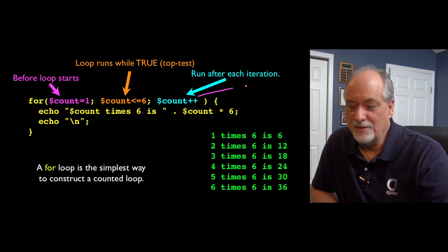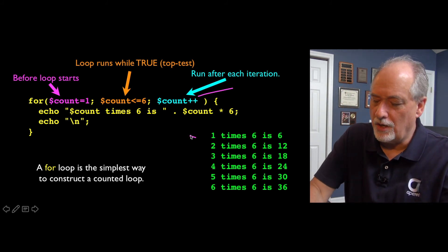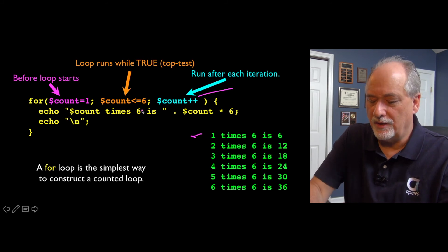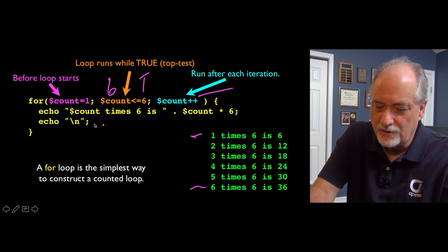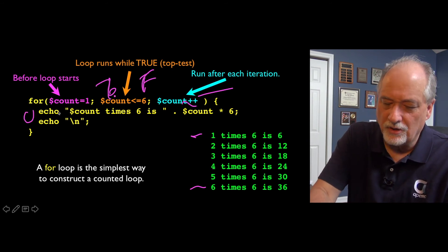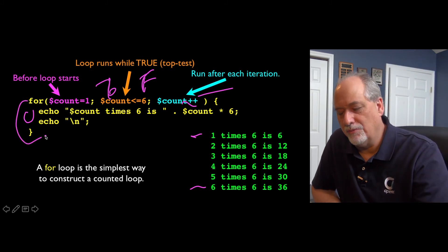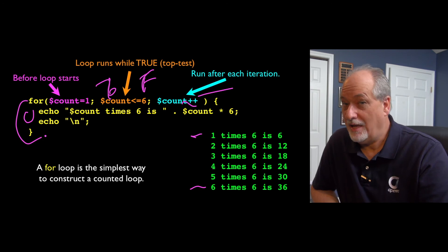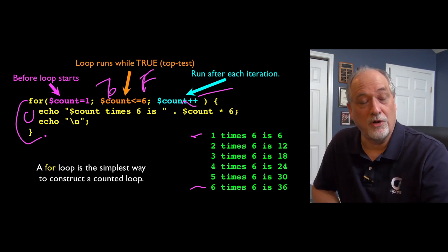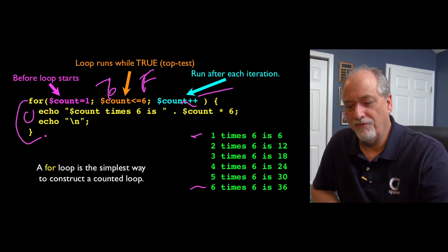That basically is going to run this, and it's going to start count from one, and when count is six, this is true. So it runs one more time when it's six, but then count becomes seven, and this becomes false, and then it skips out. So that's a counted loop. You just construct a counted loop. You create a variable that is your iteration variable. You initialize it in the first part. You check its ending value in the second part, and you make sure that you add one, or subtract one, or whatever it is that you need to do for your loop.